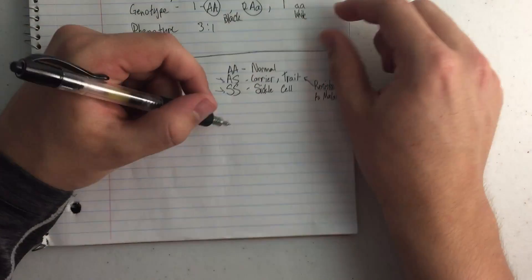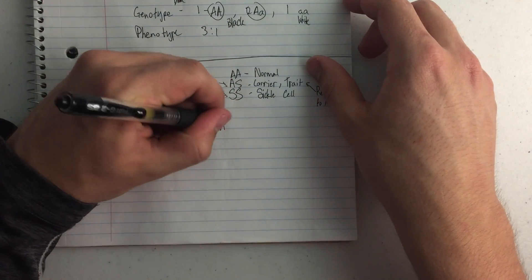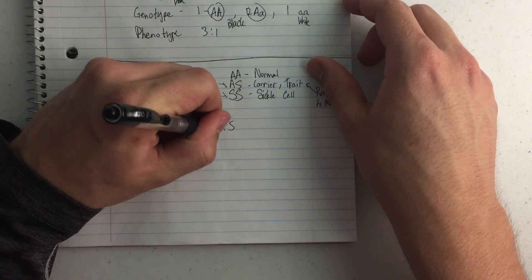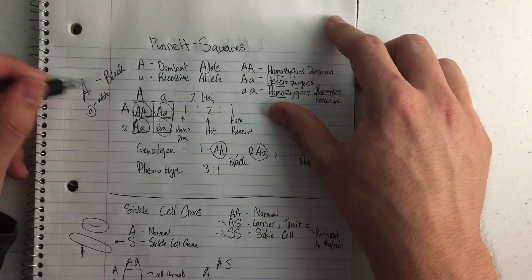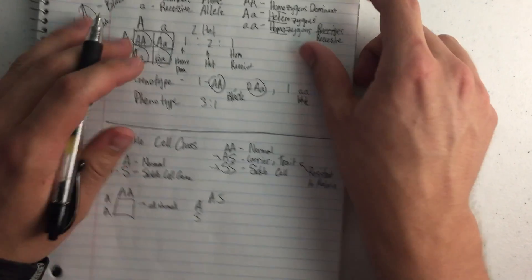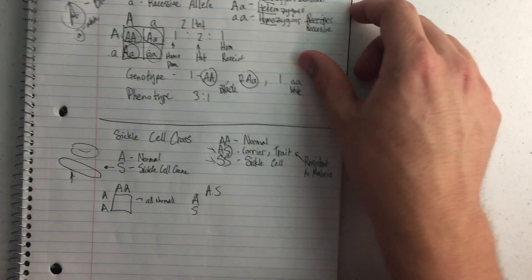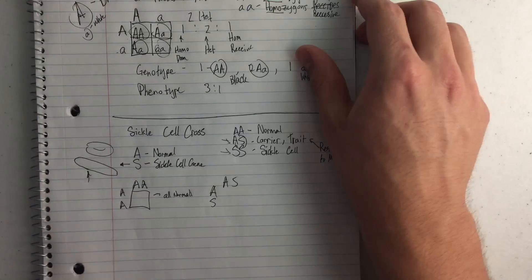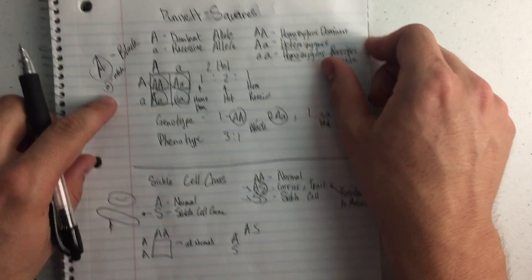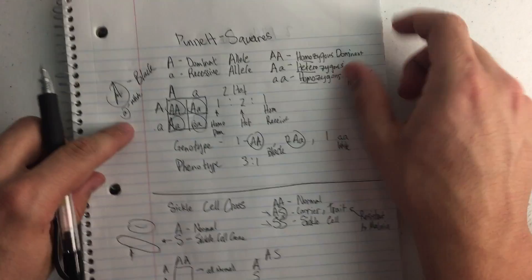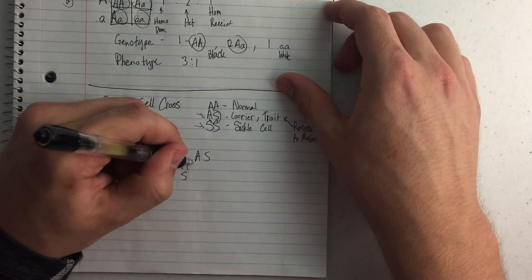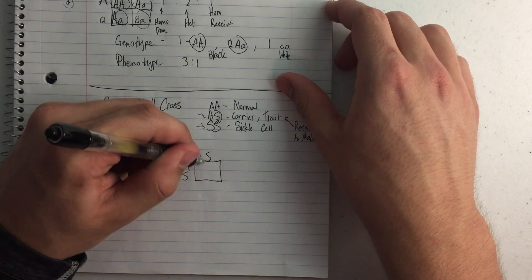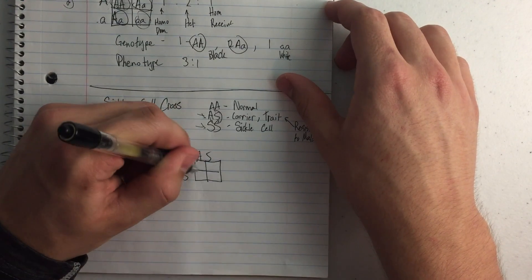If we do a heterozygous cross of AS × AS, let me explain the notation first. Instead of using a lowercase 'a' for the recessive allele, we're going to use a capital S. So lowercase 'a' and capital S represent the same allele — that's the only difference from the previous standard example.